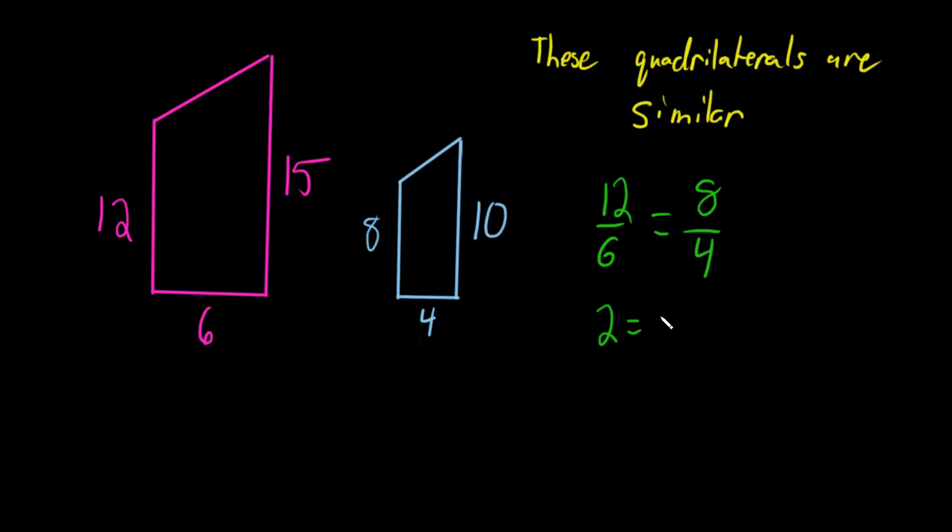8 over 4, 8 divided by 4, that is 2. So it's easy to see that these ratios are the same in this instance.